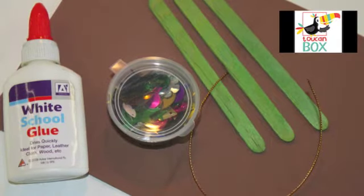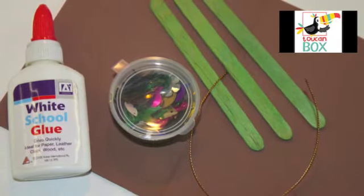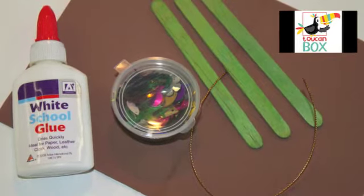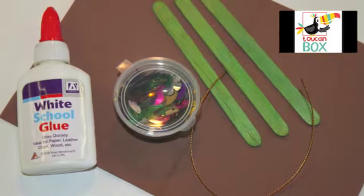For this activity you will need 3 green lolly sticks, 1 brown foam sheet, sequins, white glue and a piece of string.